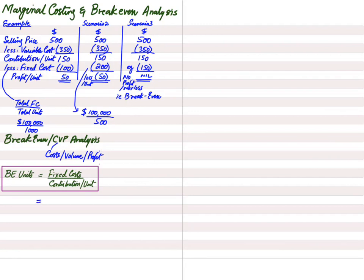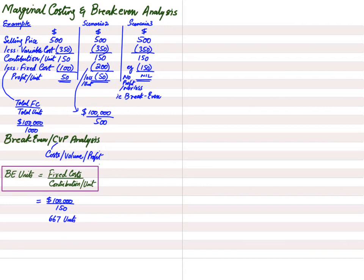Applying the formula to our shirt business: Total Fixed Cost = $100,000 per month; Contribution per shirt = $150. Dividing $100,000 by $150 gives 666.67, which we round up to 667 shirts. So if we sell 667 shirts in any given month, we break even — no profit, no loss.